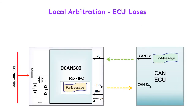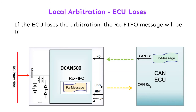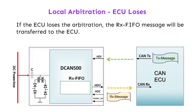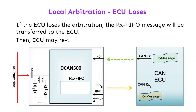If the ECU loses the arbitration, the RX FIFO message will be transferred to the ECU. Then, the ECU may re-transmit its CAN message.